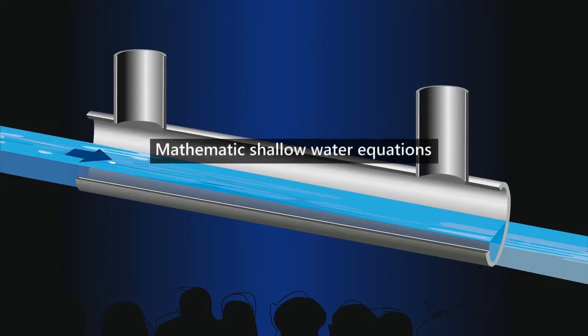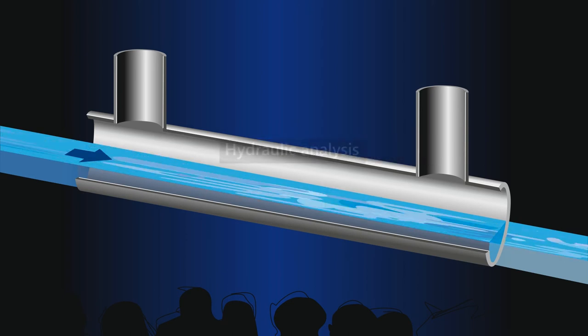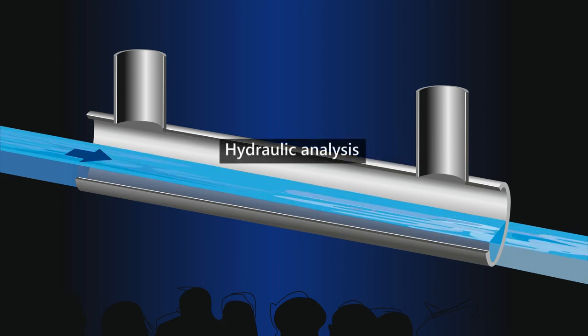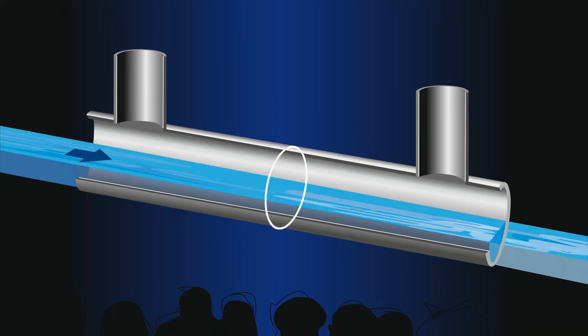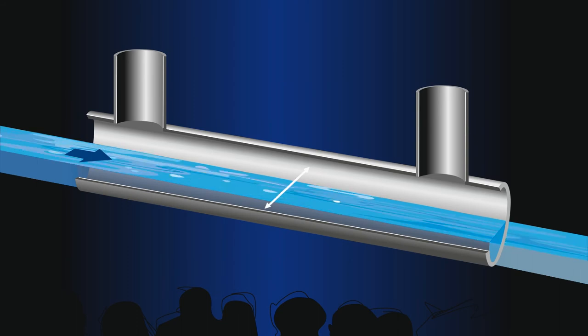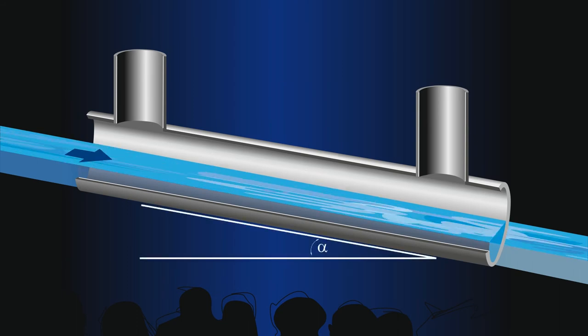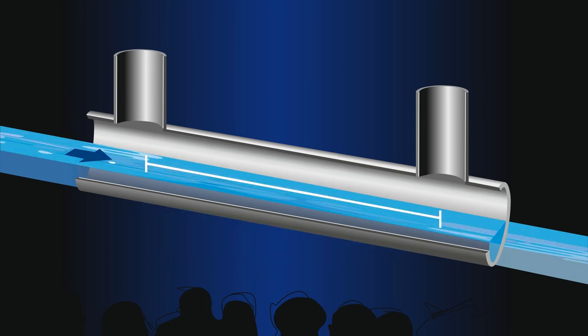The NIVU system is based on the mathematic shallow water equations. To perform a hydraulic analysis, first, the geometric features of the measurement point are determined: shape and dimensions of the canal, the slope, as well as the accurate distance between two level measurement points.